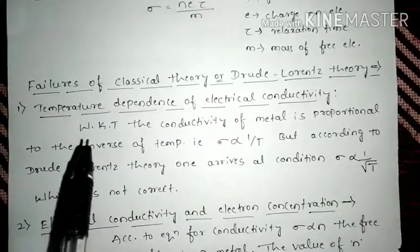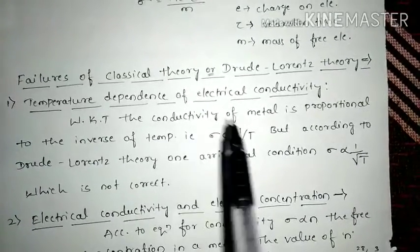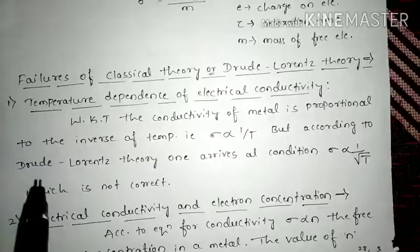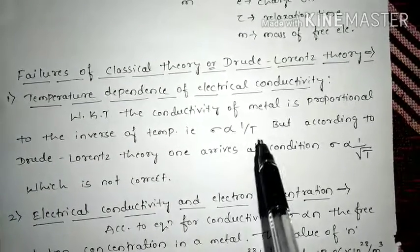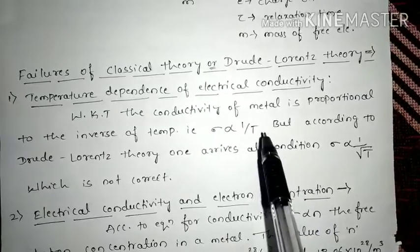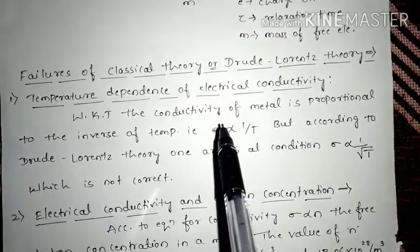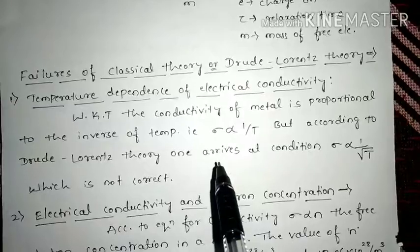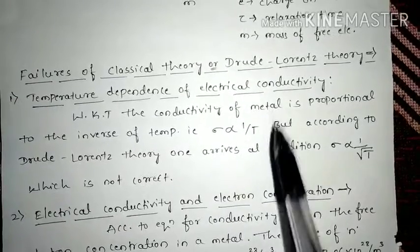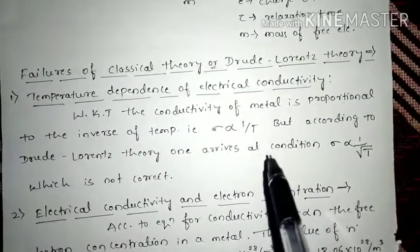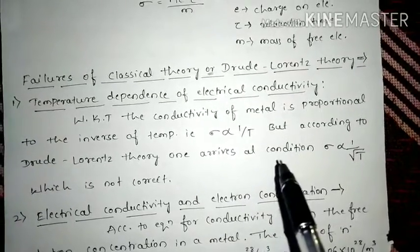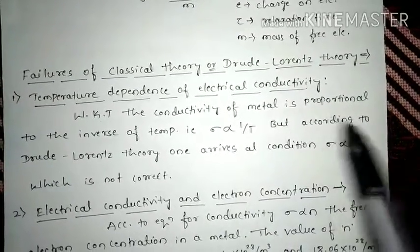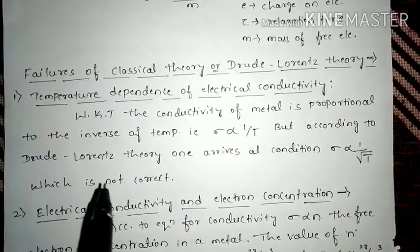Now dear students, we know that the conductivity of metal is proportional to inverse of temperature, that is, σ is inversely proportional to T. As you go on increasing the temperature, the conductivity will go on decreasing. Because as you increase the temperature, the resistance will increase, and when resistance increases, the conductivity will decrease.